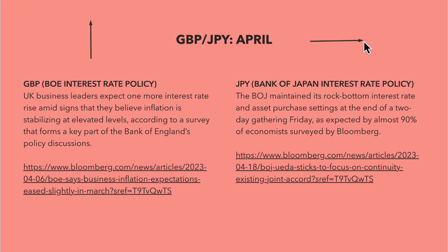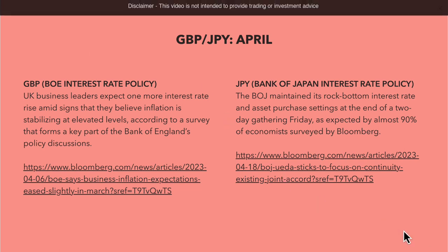The Bank of Japan was maintaining their rock-bottom rate of essentially minus 0.1%. So you had one central bank hiking and one looking to hold. New BoJ governor Ueda was quite dovish on monetary policy. Before this, there was some speculation that the BoJ could have adjusted yield curve control (YCC) in a way that would appreciate their currency, but they elected to keep rates on hold. One central bank hiking, one holding.